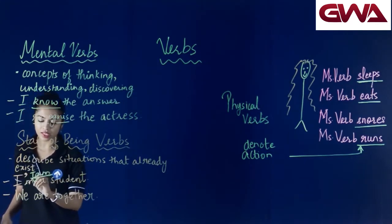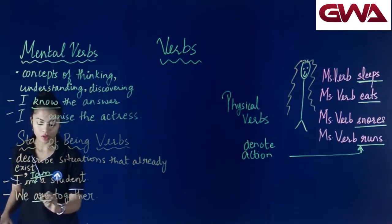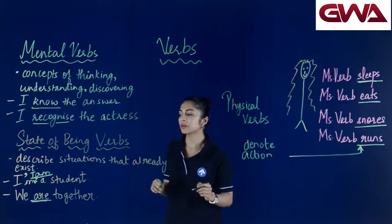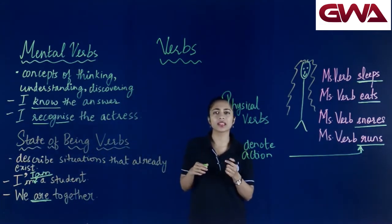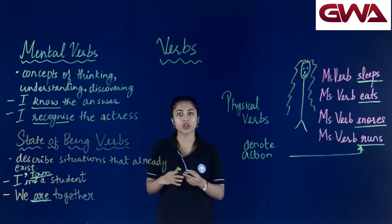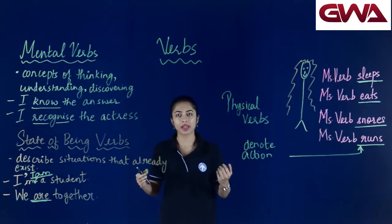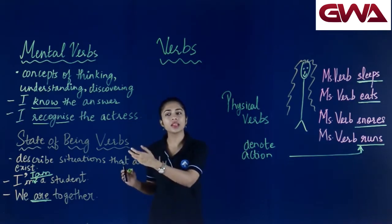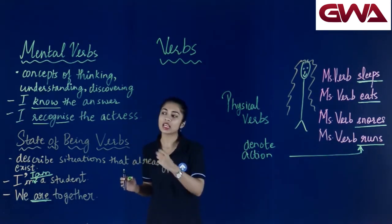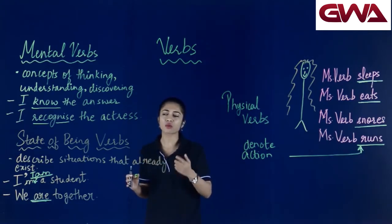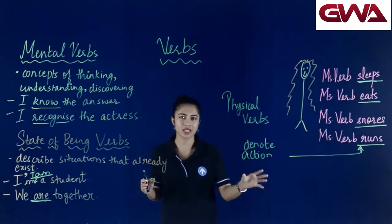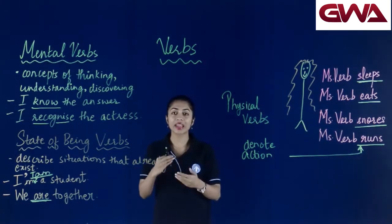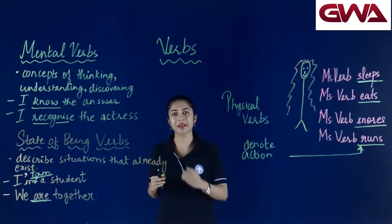I am हमारा verb है, और second sentence में we are together — are हमारा state of being verb है। State of being verbs simply बताते हैं कि I am a student — मैं student हूँ, या हम साथ में हैं। कोई action नहीं denote करता, ना ही हम कुछ सोच रहे हैं — basically state of being verbs जो होते हैं वो एक condition जो exist करती है, उसके बारे में denote करते हैं।